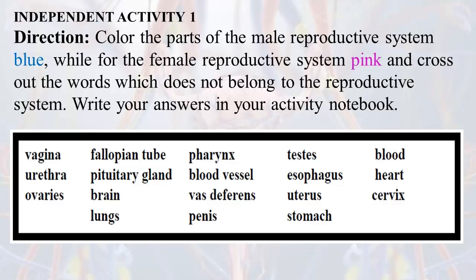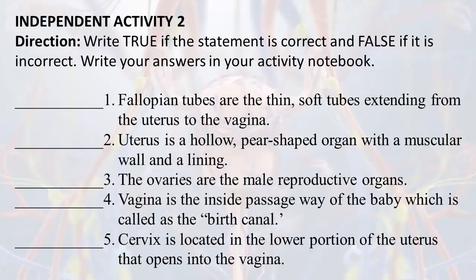Independent Activity 1 Direction: Color the parts of the male reproductive system blue, while for the female reproductive system use pink, and cross out the words which do not belong to the reproductive system. Write your answers in your activity notebook. Independent Activity 2 Direction: Write true if the statement is correct, and false if it is incorrect. Write your answers in your activity notebook.